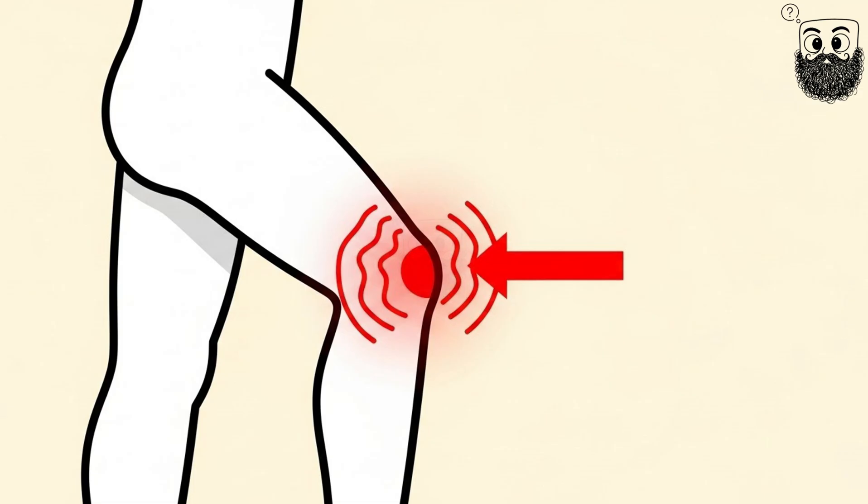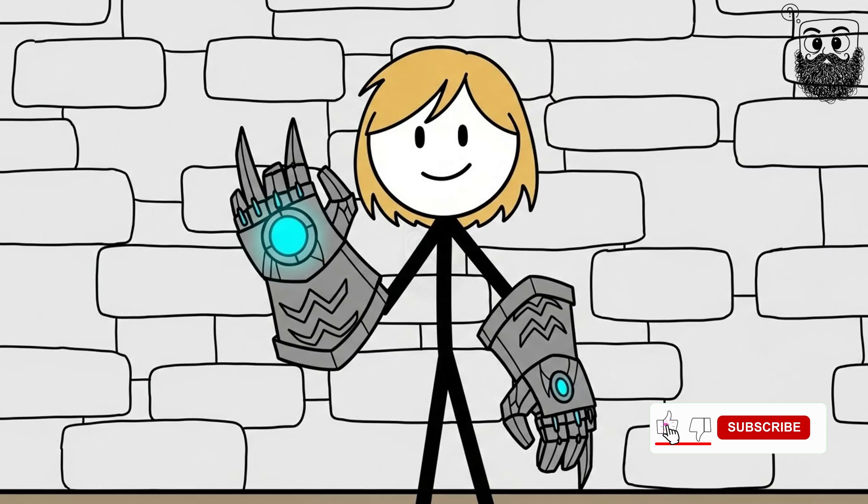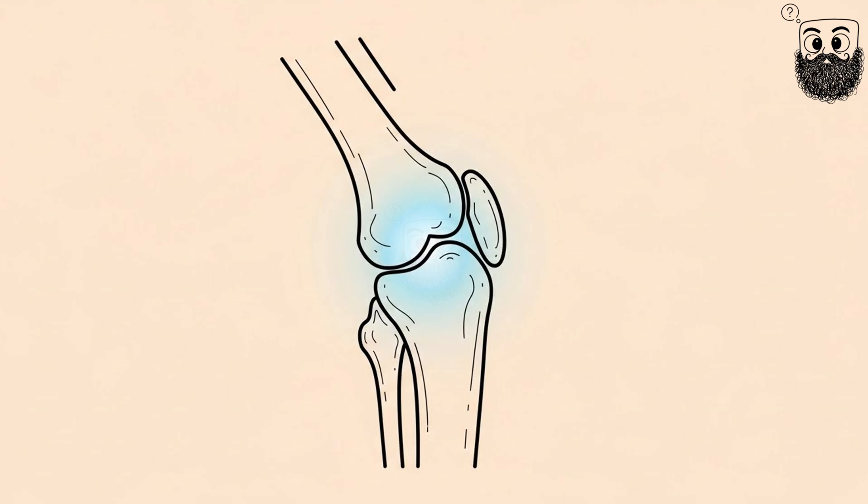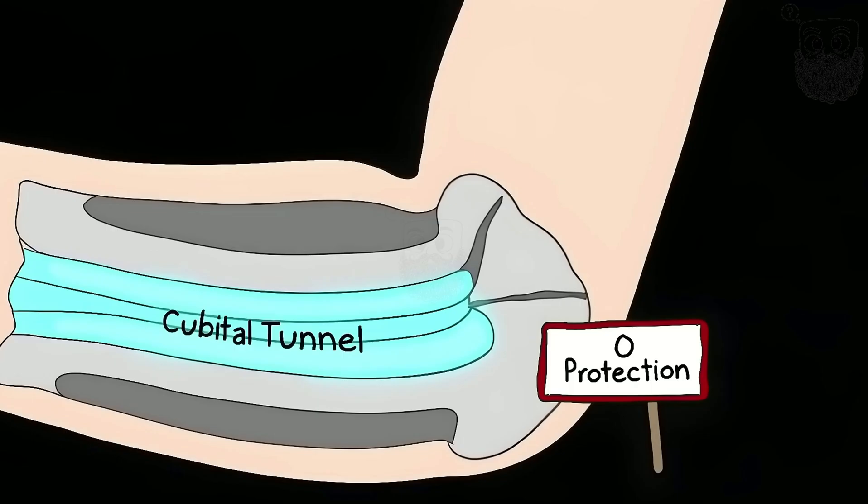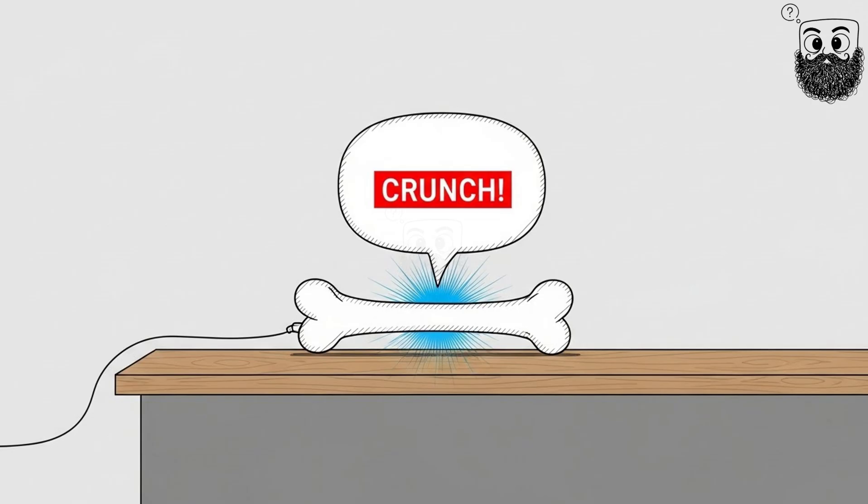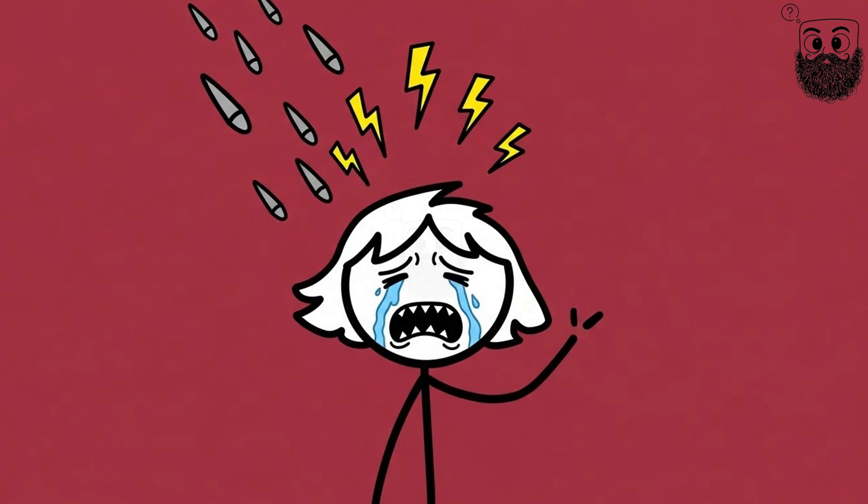What you're actually smacking is your ulnar nerve. This nerve runs from your neck all the way down to your hand. For most of the trip, it's safely tucked away behind muscles and bones like it's wearing body armor. But at your elbow? It's basically naked, just sitting there in a little groove called the cubital tunnel, right under your skin with zero protection. It's like having an exposed electrical wire hanging off the side of your house. When you whack that spot, you're crushing the nerve directly against bone. The nerve completely freaks out and fires off a bunch of confused signals to your brain. Your brain translates this chaos into that horrible pins and needles meets lightning sensation.